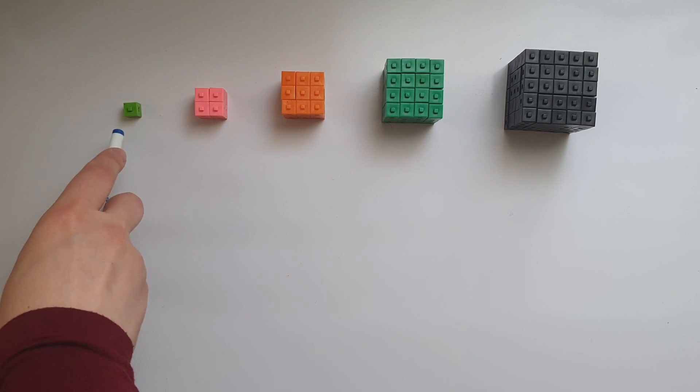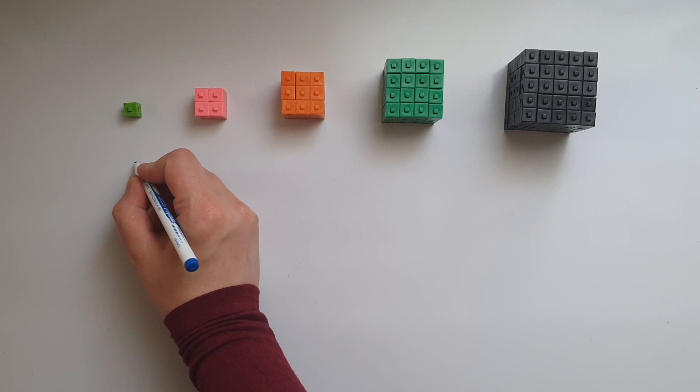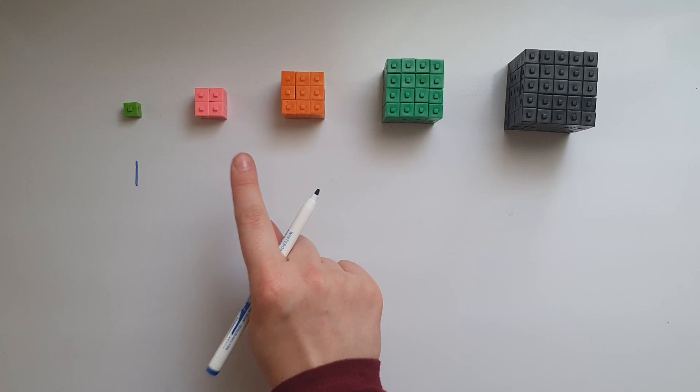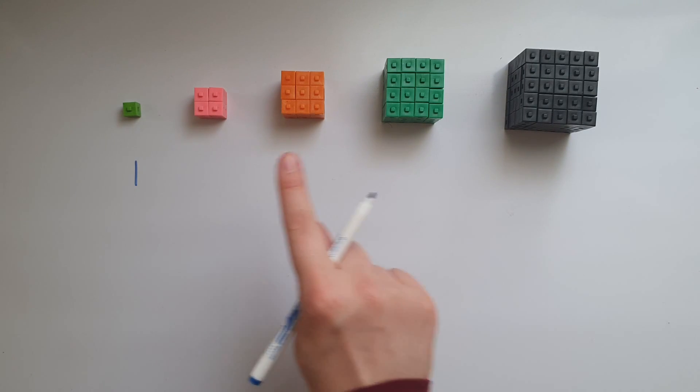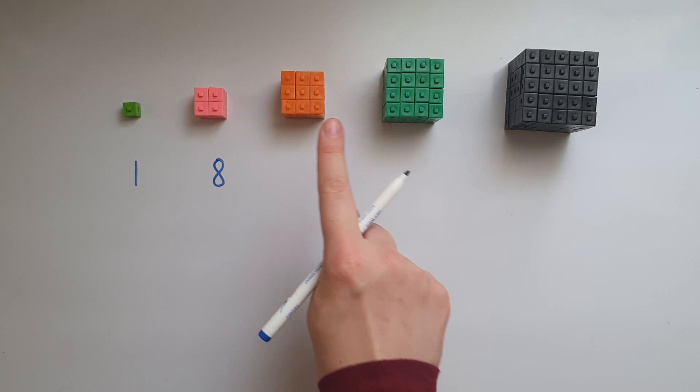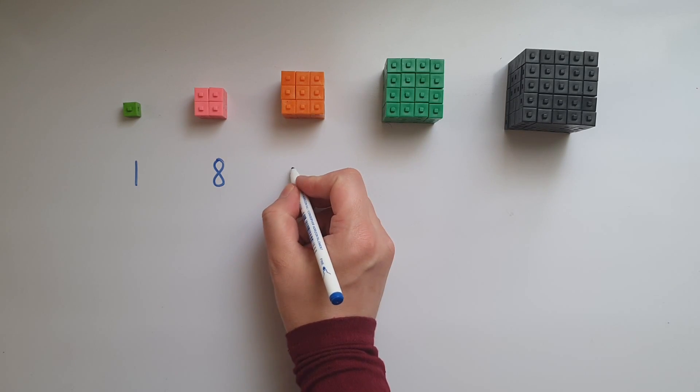1 times 1 times 1 gives us 1, so the first cube number is 1. The second cube number is 2 times 2 times 2, which gives us 8. Then 3 times 3 times 3, which is 27.